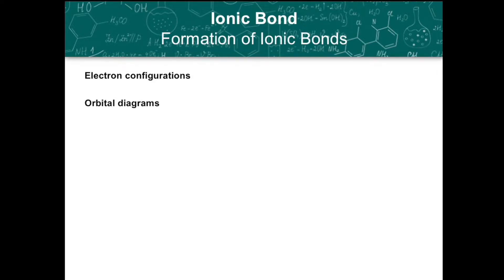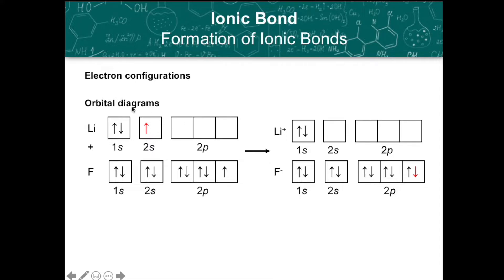We can see here the transfer of an electron from a lithium atom going to a fluorine atom. Each atom is one electron away from the configuration of its nearest noble gas. Lithium loses its single outer electron and is left with a filled first energy level with two electrons, while fluorine gains a single electron to fill its second energy level with eight electrons.